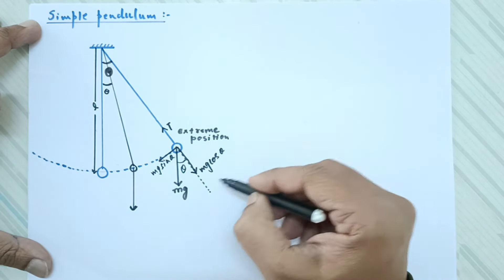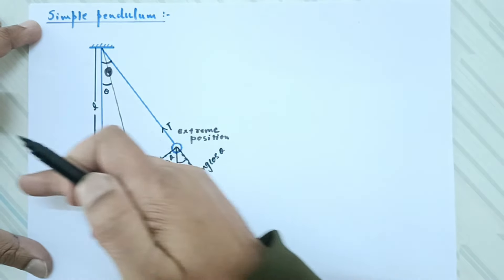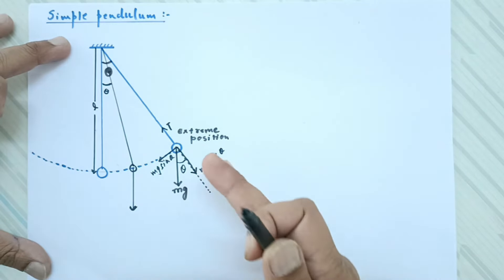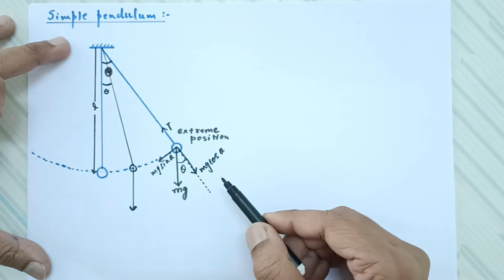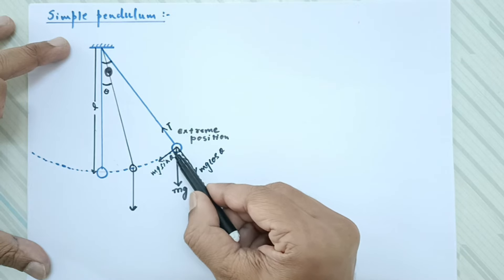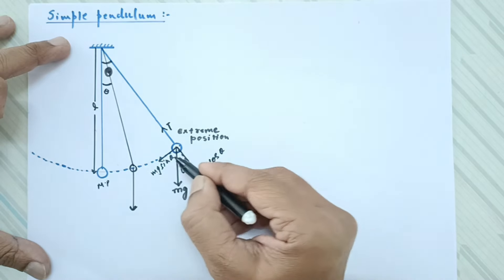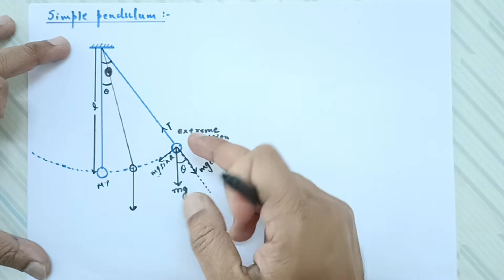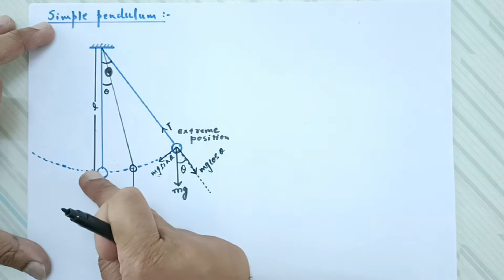T minus mg cos theta provides the necessary centripetal force for the curved circular motion of the pendulum. The force responsible for taking the pendulum back to its mean position is mg sin theta. This is the extreme position and that is the mean position — mg sin theta is the restoring force directed toward the mean position.